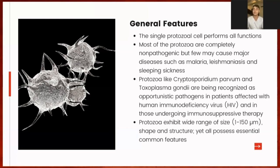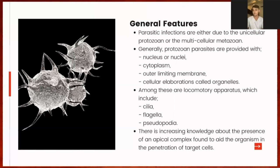Protozoans may exhibit sizes varying from 1 micrometer to 150 micrometers. There is also variation in shape and structure among Protozoans, yet all possess essentially common features. Protozoan parasites are provided with nucleus or nuclei, cytoplasm, outer-limiting membrane, and membrane-bounded organelles. Among these are also locomotory apparatus, which includes cilia, flagella, and pseudopodia. There is also an increasing knowledge about the presence of what we call an apical complex found in some members of this group, which aids the organism in penetrating target cells.